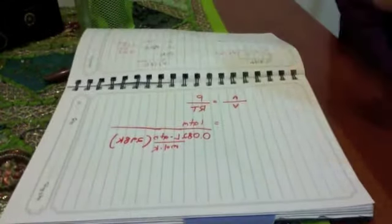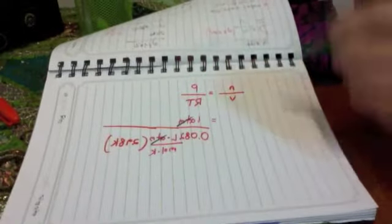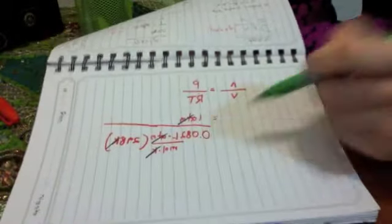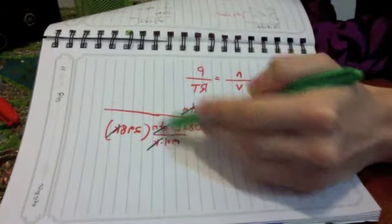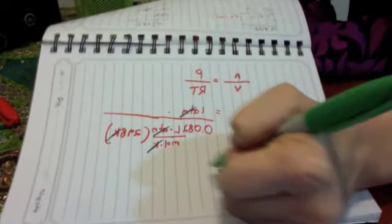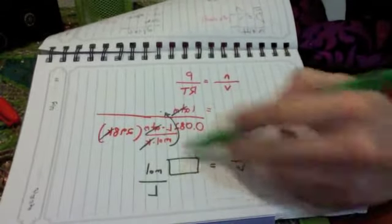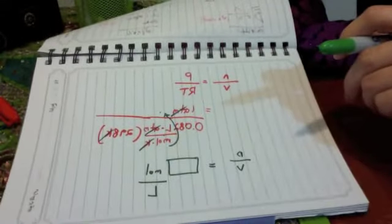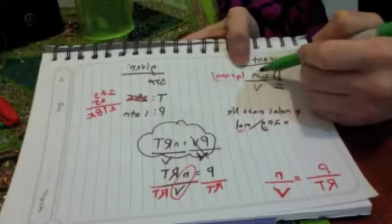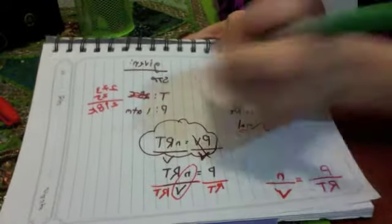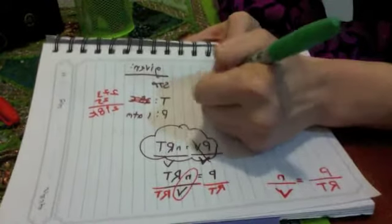And now I get to start canceling out my units. My ATMs cancel nicely. My Kelvins cancel nicely. And because this mole is at the bottom of a fraction bar on a fraction bar, when I get my final answer, the moles are going to bounce to the top. So my final answer will be in moles per liter. And again, I'm not working out the math because I just want to work on the procedure with you. N divided by V is equal to some number moles per liter. However, I don't want moles per liter. I want mass over volume. I want grams per liter.